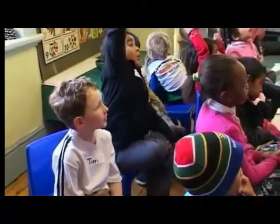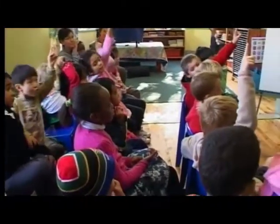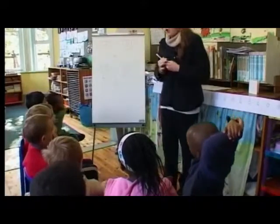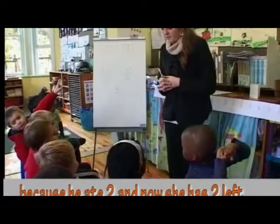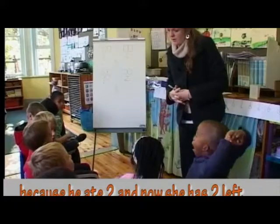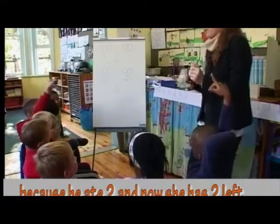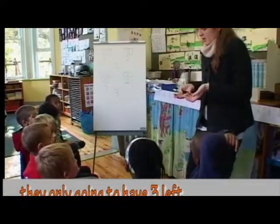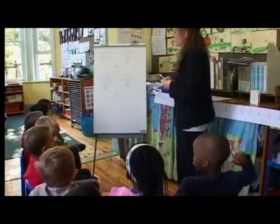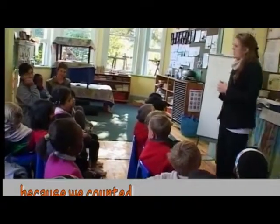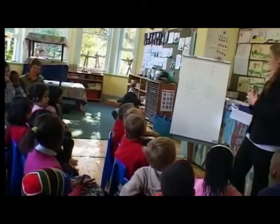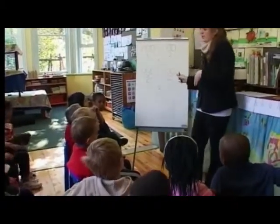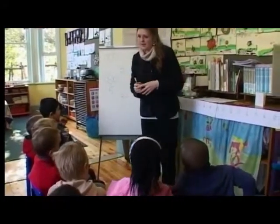Tracy asks the class to help explain their reasoning. Daniel explains: 'Because he had two of the apples and there were three left.' Tracy guides: 'We started with five, Thomas ate two, and then they only had three left.' A learner named Nina says they counted. Tracy asks, 'Did we count forwards or backwards?' The class responds: 'Backwards.' Tracy affirms: 'We counted backwards. But if you knew the answer, you'd add two more and know it would be five. Nina said she counted backwards. Well done, Grade R's.'